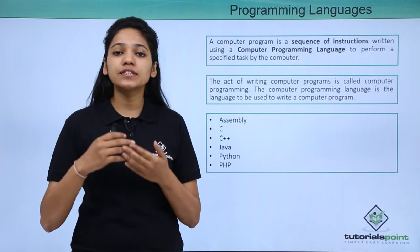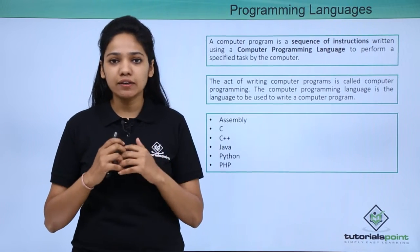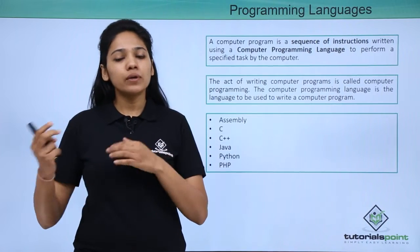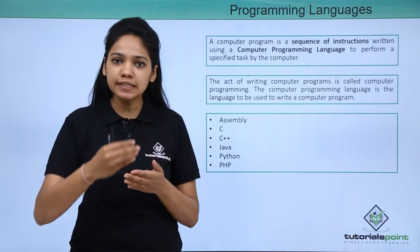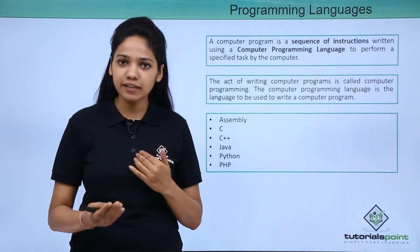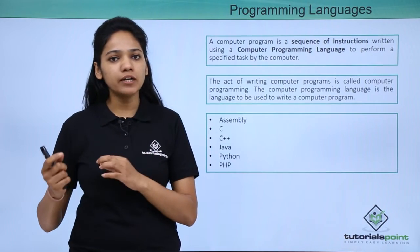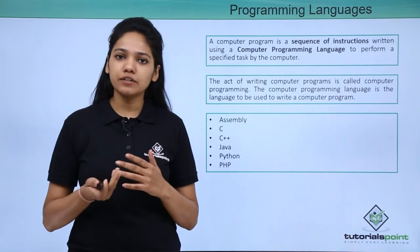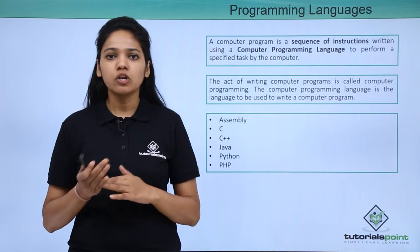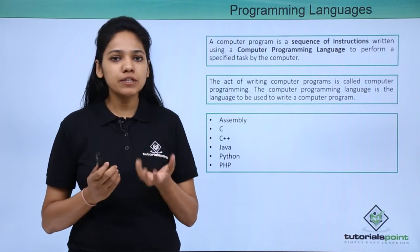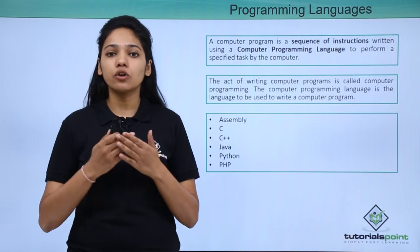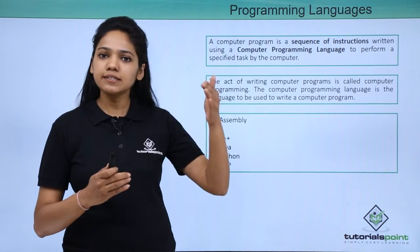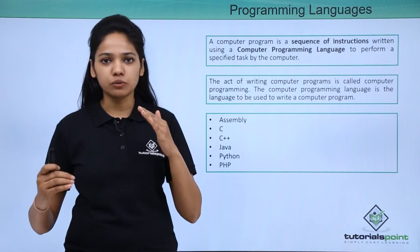The language that we write in is a high-level language, which is also called source code. But when a computer executes these instructions written in English, they must be in a format of 0 or 1, which is binary format called machine code. So there must be some tool or software or program which converts this source code into machine code.